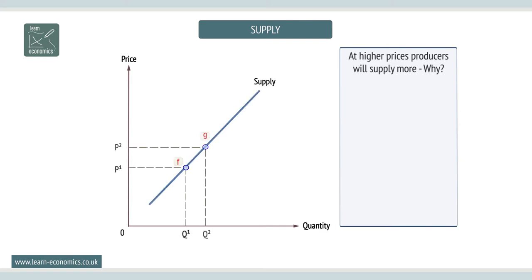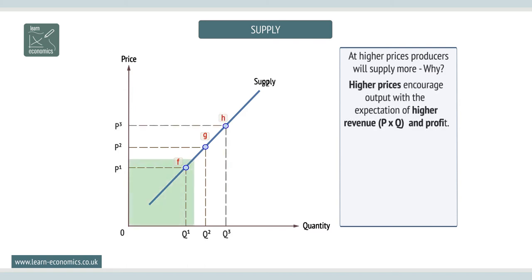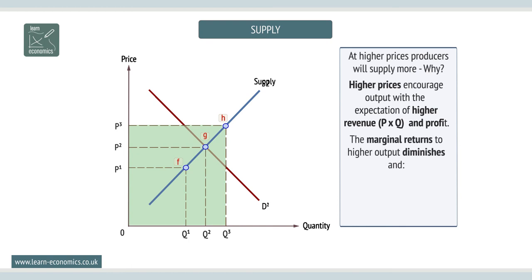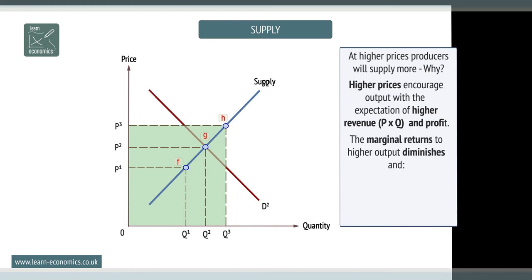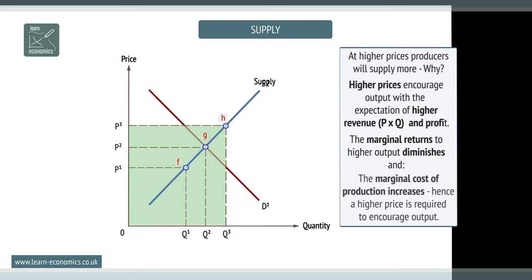Why do they do this? There are several answers. Higher prices encourage output because there is an expectation of higher revenue, which is price times quantity, and higher profit. Also, the marginal returns to higher output diminish and the marginal cost of production increases, hence a higher price is required to encourage output.